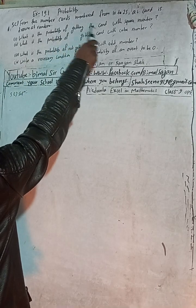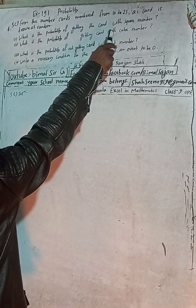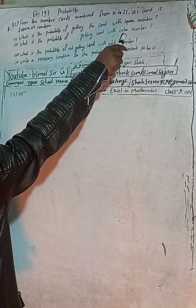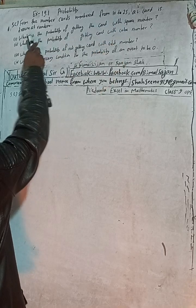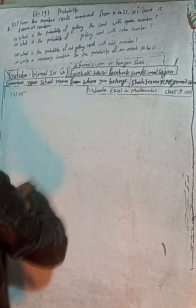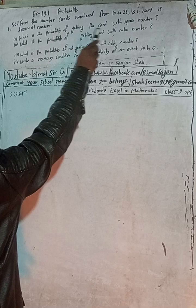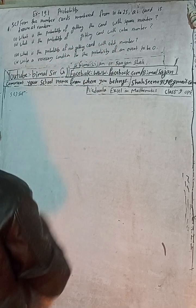Here the question is: from the number cards numbered from 10 to 25, a card is drawn at random. What is the probability of getting the card with a square number?